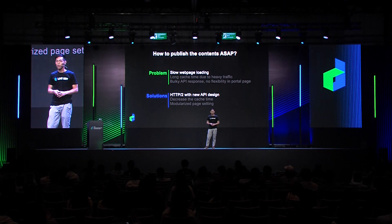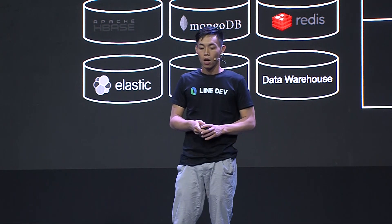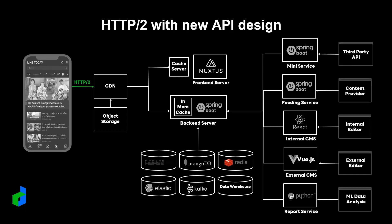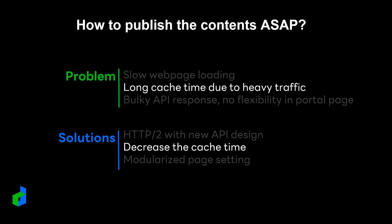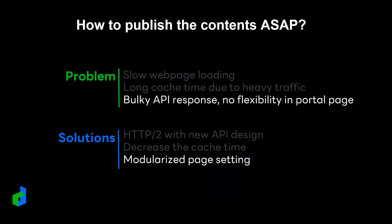Based on the architecture we proposed, we have encountered some problems. What we want is to let content be published to users as soon as possible. The problems can be separated into three parts. First is slow web page loading, caused partly by outdated HTTP 1.1. With HTTP/2, TCP connection utilization is progressively increased by single TCP connection multiplexing. We also redesigned our API to decrease the API payload, which further speeds up the page load time. The second problem is long cache time due to heavy traffic loading. With the microservice architecture, we can decrease cache time per service to fit its characteristics. The third problem is our original page API — a single bulky API containing all pages and their data — which caused slow API load time due to massive payload.